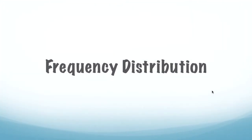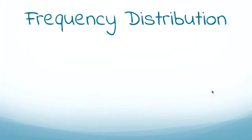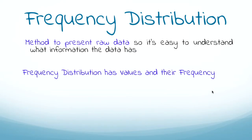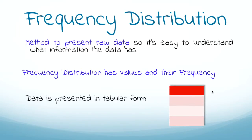Moving on, we have something called frequency distribution. What is frequency distribution? We have data values and their frequency, and we present the data in a way that helps us understand the information. Frequency distribution basically shows data values and how often each value appears. It is usually presented in tabular or graphical form; in our session, we'll mostly focus on the tabular form.